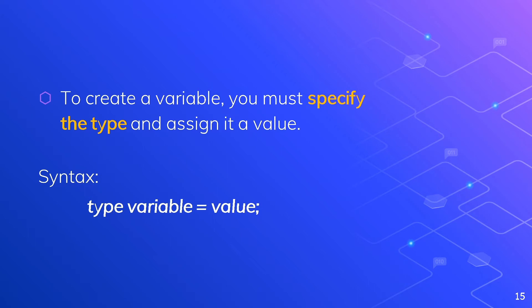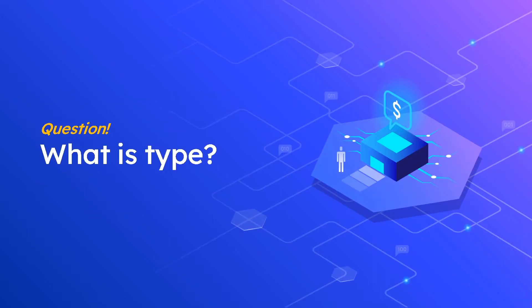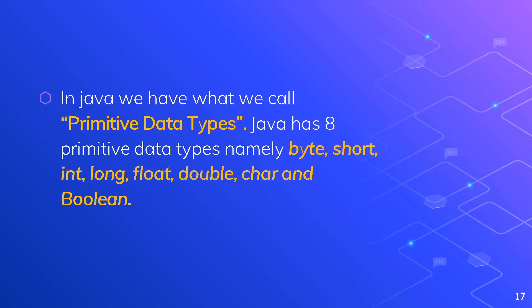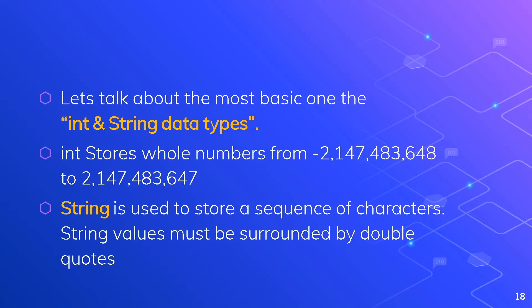What is 'type'? In Java, we have what we call primitive data types, and there are eight of them: byte, short, int, long, float, double, char, and boolean. These eight data types are primitives — predefined by Java. The most basic one is 'int'. Integer, short for int, stores whole numbers. It can store a very large range of numbers, and int is the most commonly used data type.